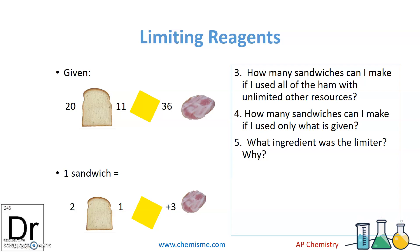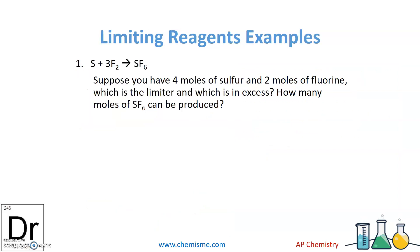You probably could have figured that out on your own, but I was showing you the steps we take. To figure out what's going to run out, we look at each individual substance — just the bread, just the cheese, just the ham — and calculate how much product we could make with just that one ingredient. Then we pick the lowest value. That's how we calculate limiting reactants.